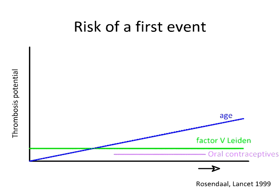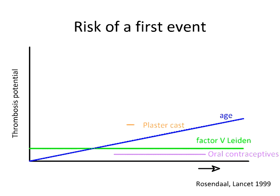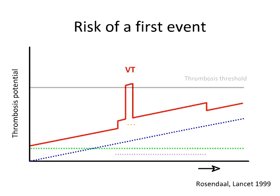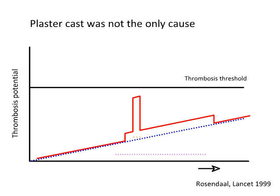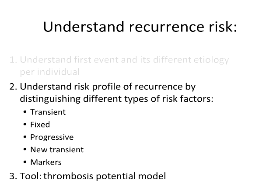At some point she goes skiing, fractures her leg, needs a plaster cast, and her thrombosis risk increases quite strongly. She accumulates so many risk factors that her thrombosis potential crosses the so-called thrombosis threshold, and at that point she develops a thrombotic event. Many people would say the cause was the plaster cast, but in this model that's not really true — she actually had four causes contributing to this event. For example, if she had not had Factor V Leiden, she would not have developed thrombosis after this plaster cast. That's how etiology works in an individual.